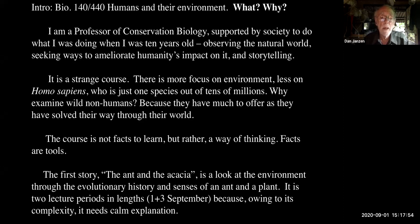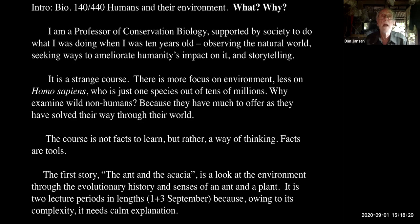This first story — the ant and the acacia — is a look at the environment. Remember, environment isn't just the weather; it isn't just whether it's hot or cold today, or whether the river is muddy or clear. Environment is all the things that are out there. It's a look at the environment that contains these other things through both their evolutionary history — how did they get to be what they are? — and then what do they do as being what they are. Acacia, for those of you who aren't familiar, is a kind of tree. So we're dealing with an ant and a kind of tree.